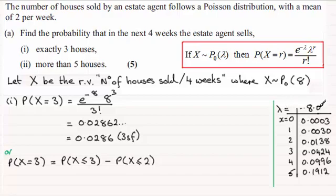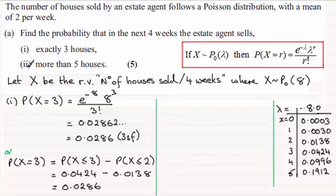If you look at the tables, make sure you look up a mean of eight, and then the probability of X being less than or equal to three is this value here, 0.0424. So you've got this equals 0.0424, and then minus the probability X is less than or equal to two, which is this value here, 0.0138. Subtract those two and you find you get 0.0286. Now we move on to the second part of this question.